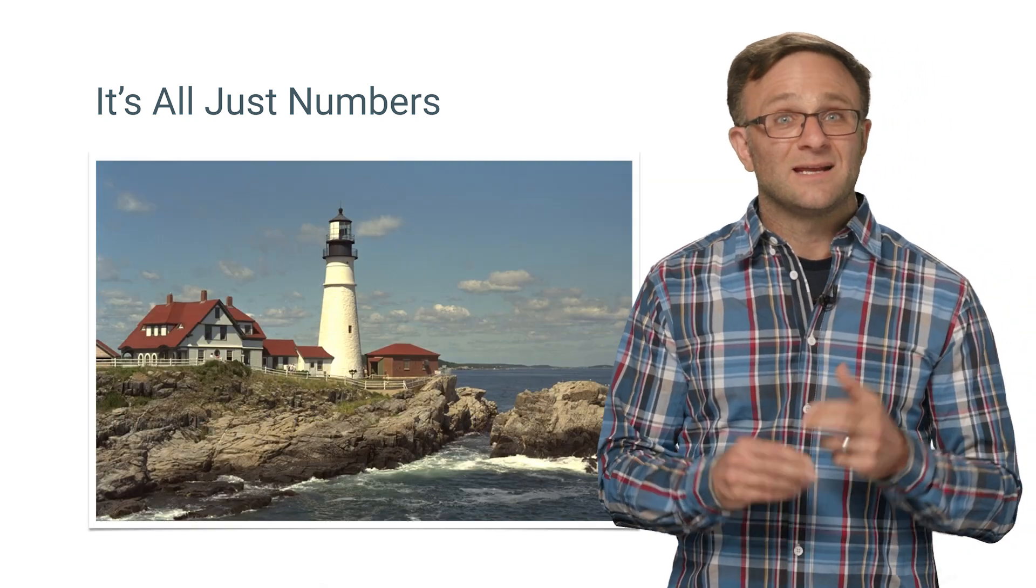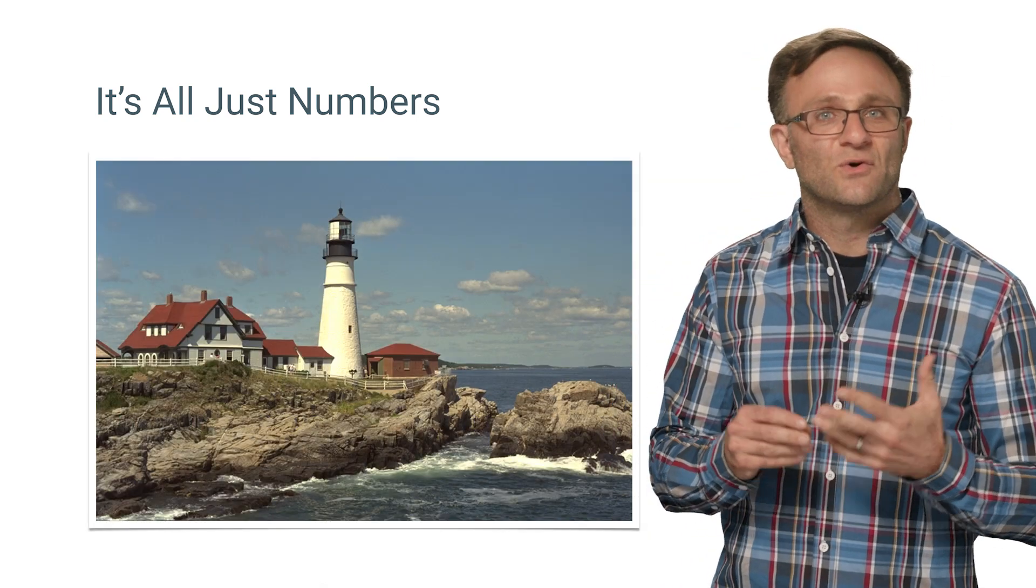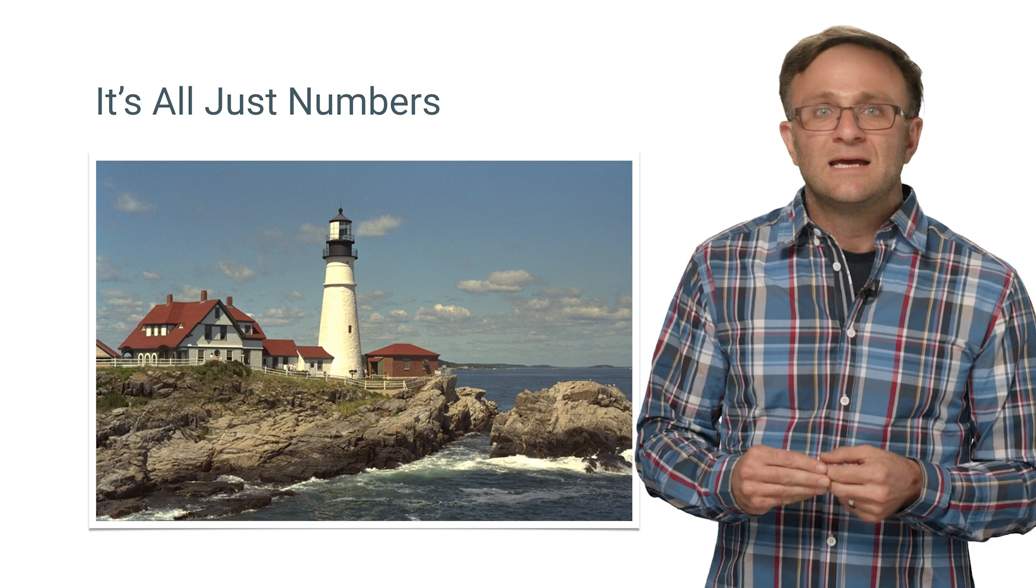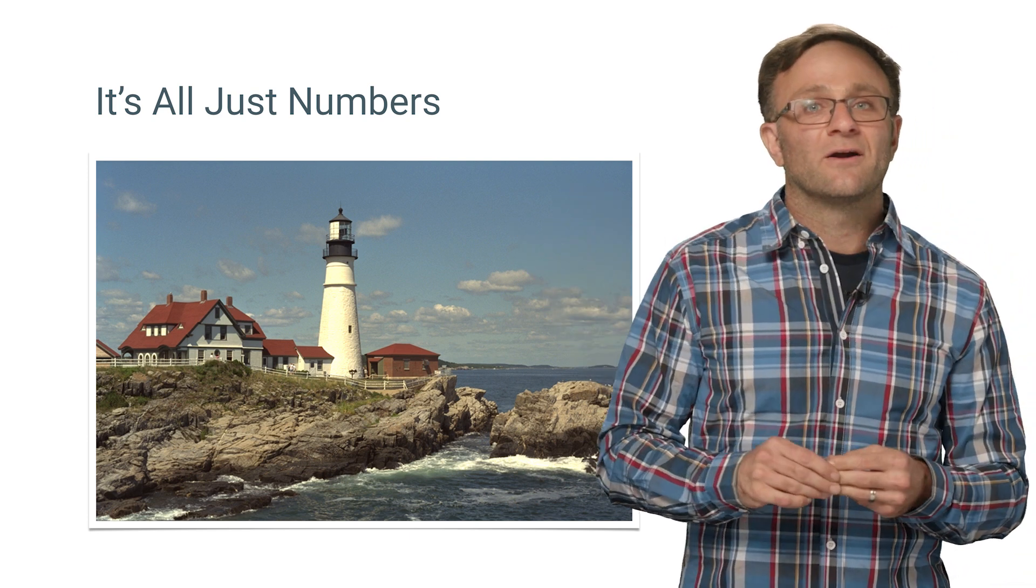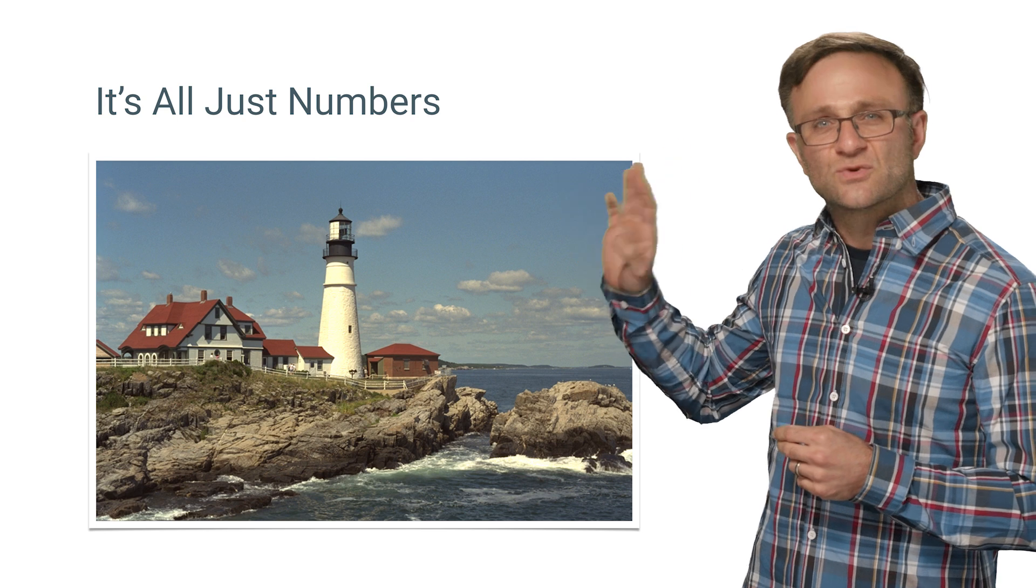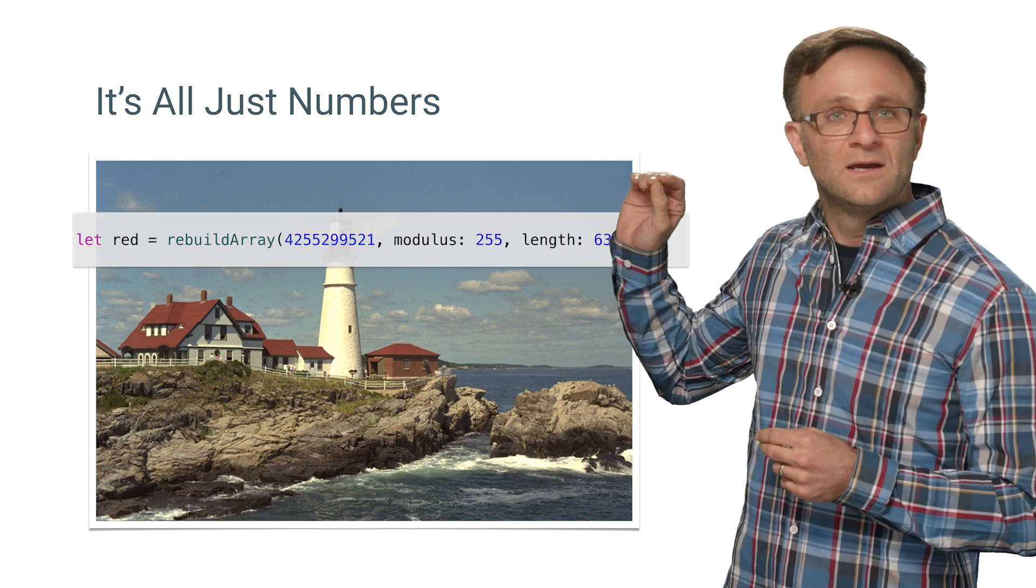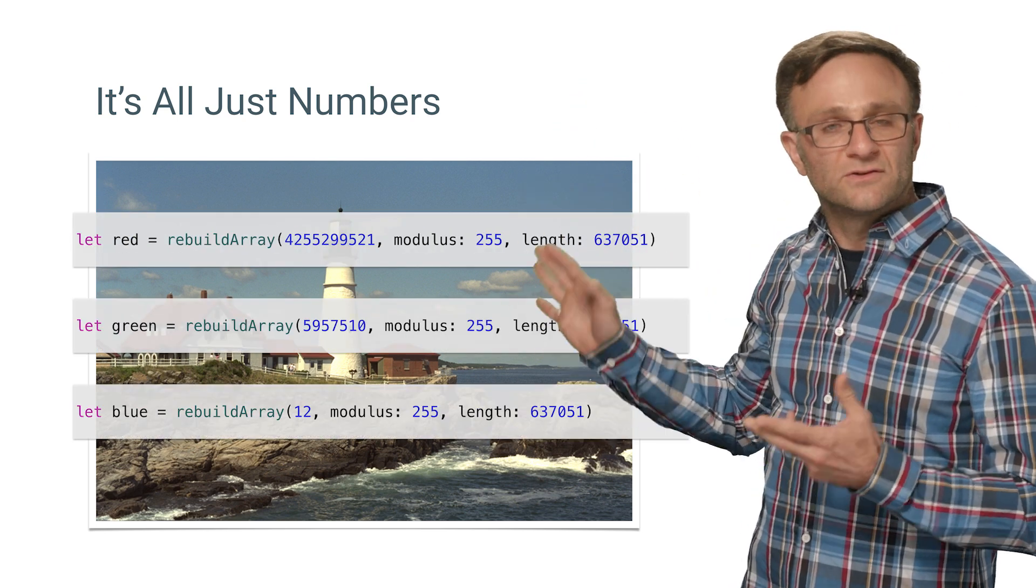And my gosh, if you think about it, an image is really just a stream of numbers broken out into several channels. Take a look at this image here, and you can see how, using our random number generator, I've been able to replace it with just three sets of integers for the red, green, and blue channels respectively.